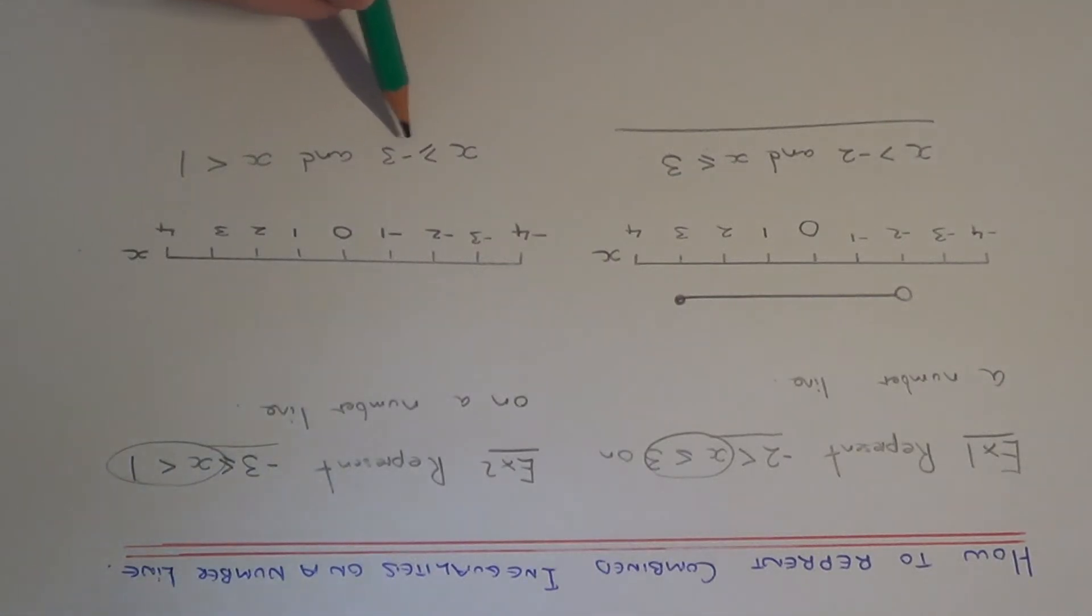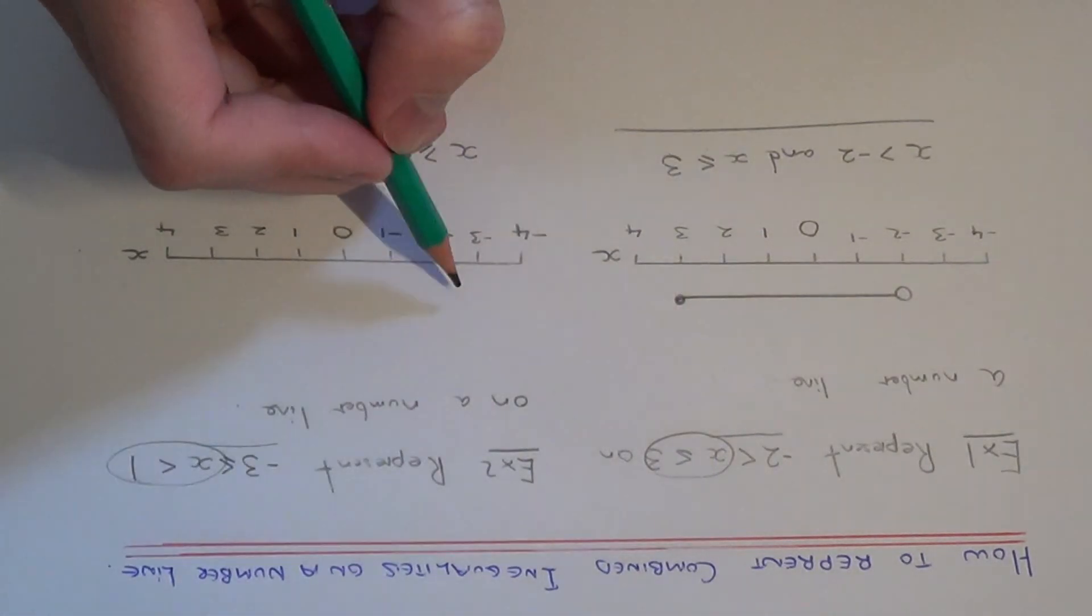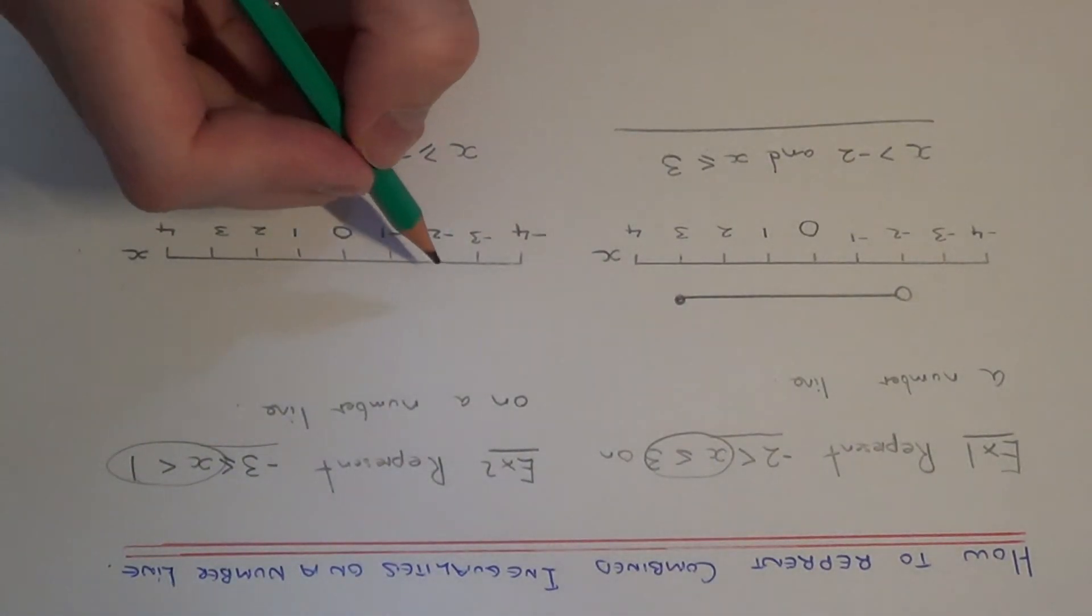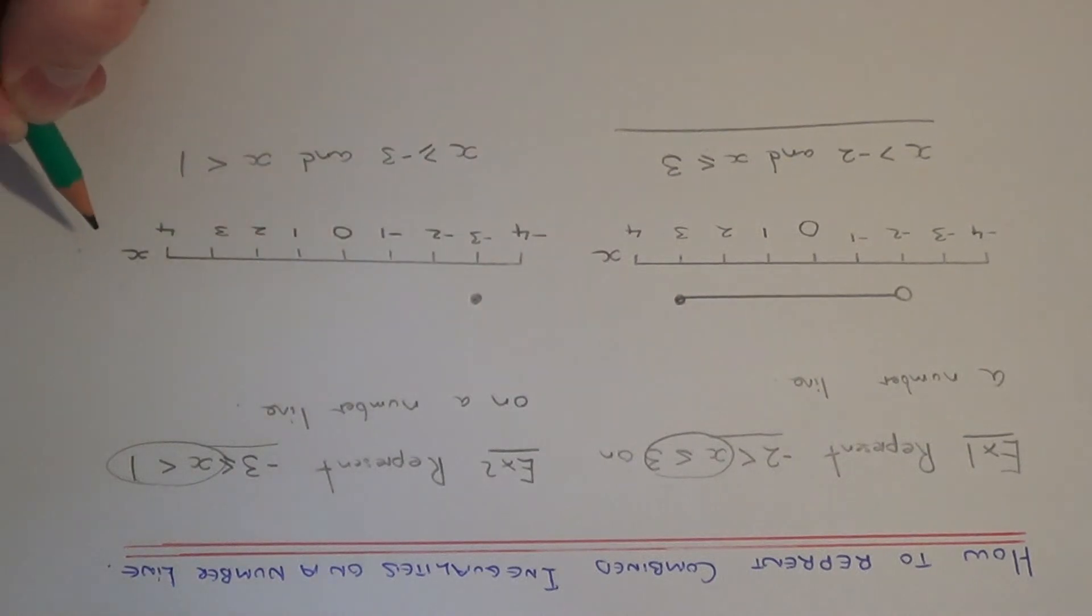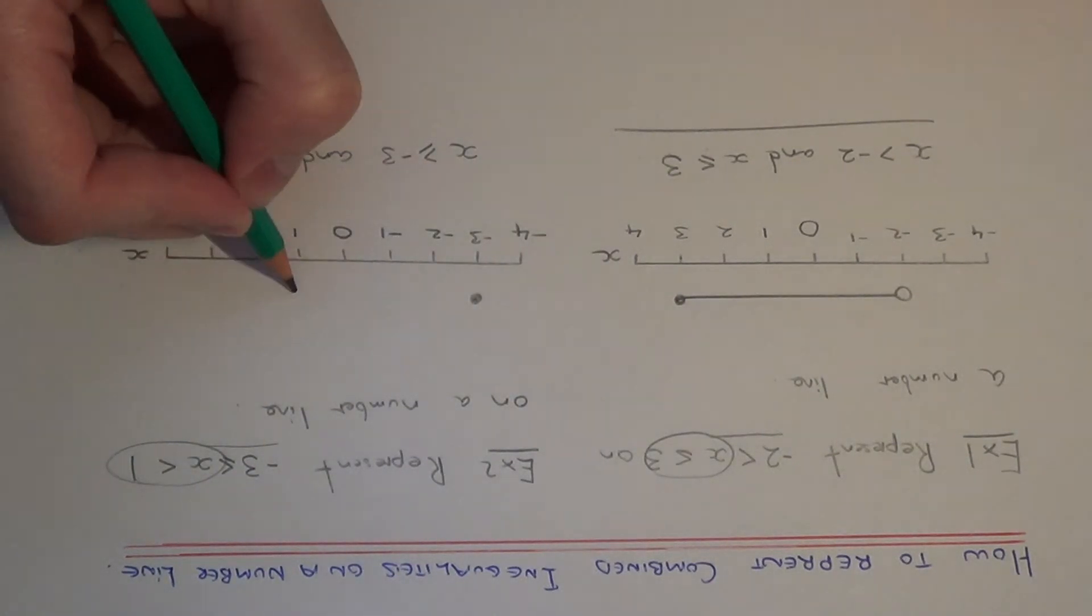For minus 3 then we do a coloured circle as it's more than or equal to. And for x is less than 1 we do a circle which isn't coloured in at 1.